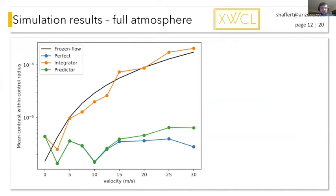So we can also do this as function of velocity, and then see what the mean contrast is within the control radius. And then we see that for the integrator, we see that it perfectly matches what you would expect from frozen flow. The contrast degradation, the predictor almost stays close to the perfect controller. And only at the end, at the very high speeds, we see a bit of degradation.